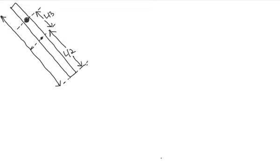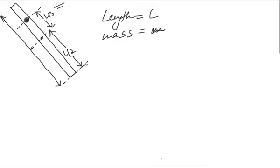In this question we have a uniform rod of length L and mass M and it is pivoted at a point that is at a distance of L by 3 from its center of mass.